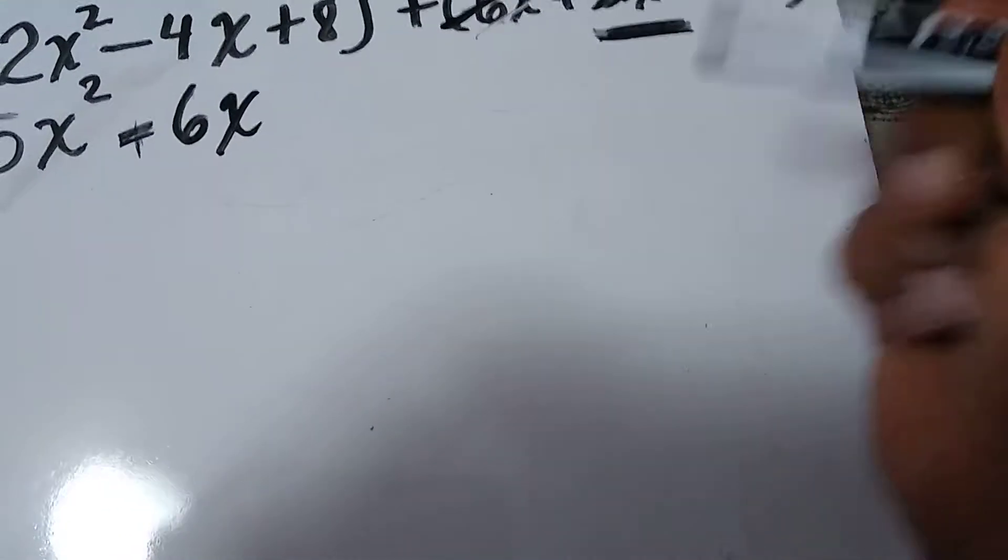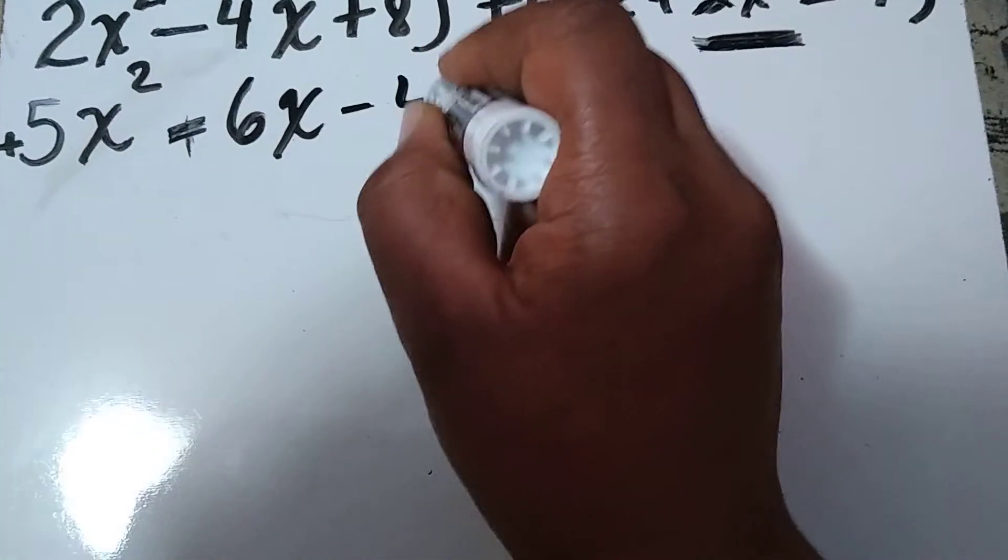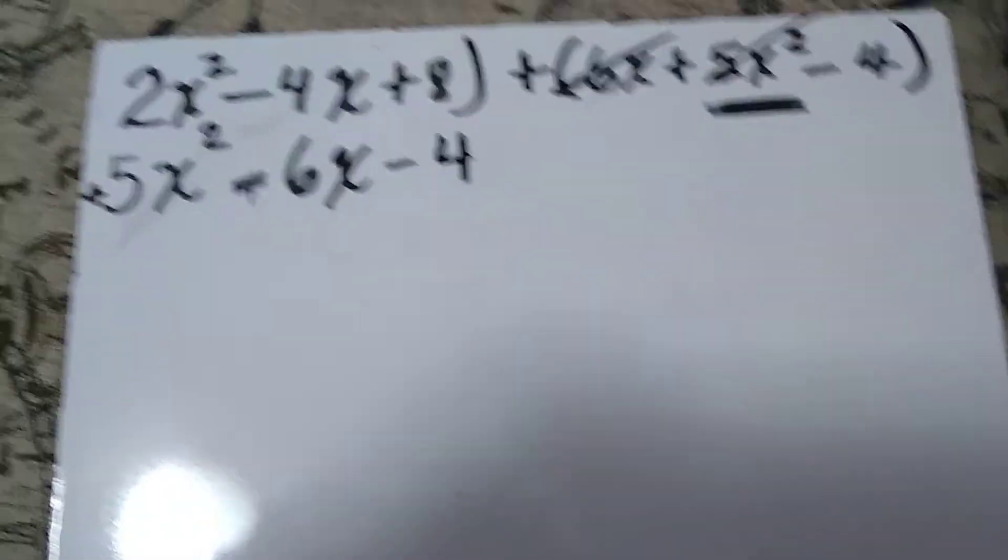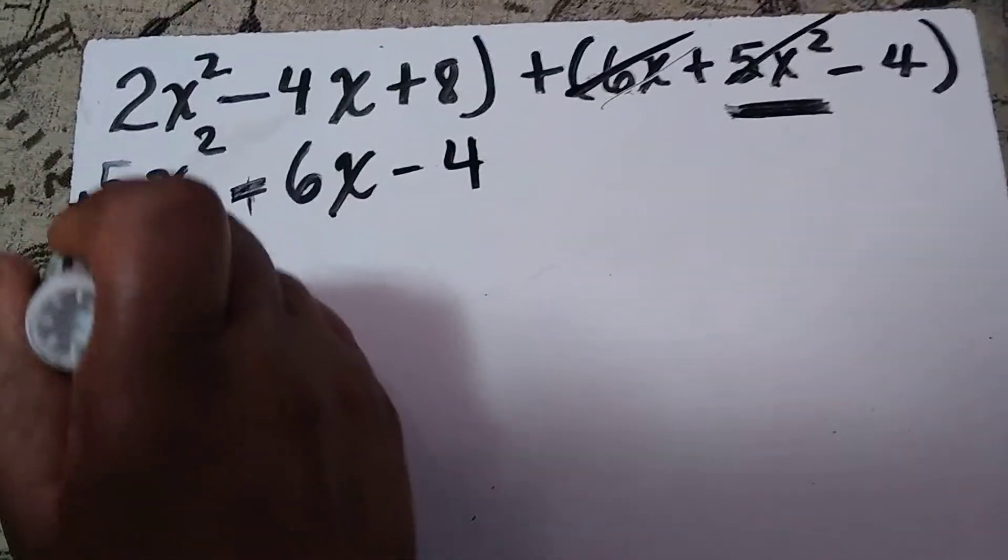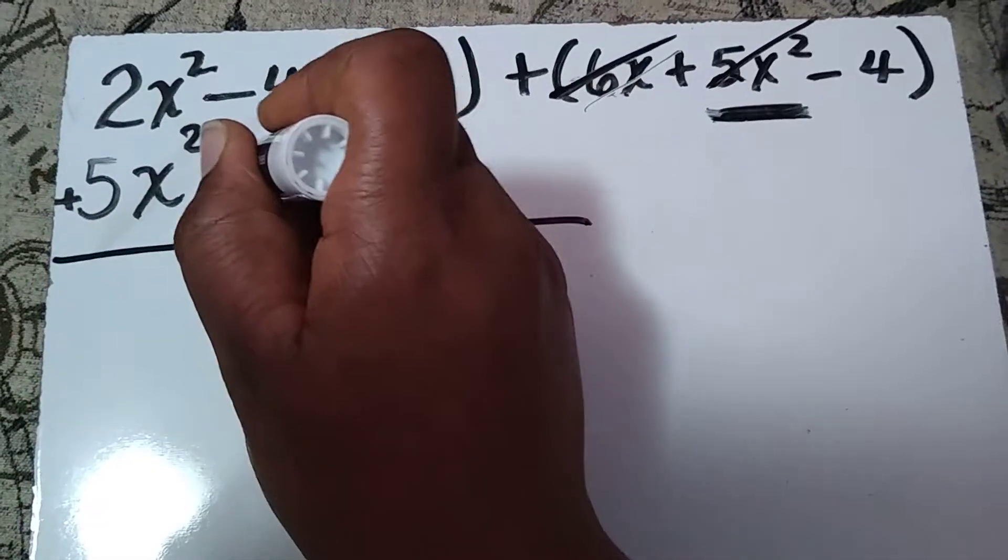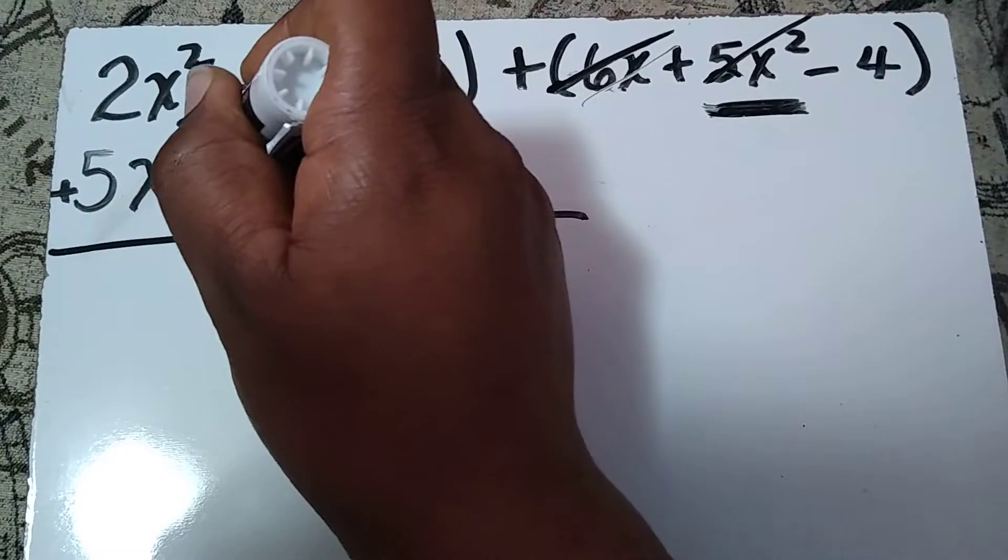Then I have -4, negative 4, so I'm going to put -4 with the constant. So if you notice, everything is all lined up, and now we can go ahead and add.